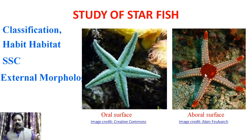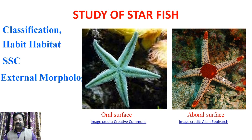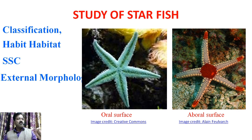First of all, anus. The anus is present at the center of the central disc on the aboral surface. Then it consists of the madreporite. It is a porous, button-shaped structure present at the inter-radius of the central disc on the aboral surface. The two arms between which the madreporite is situated are called a bivium and the remaining three arms are called a trivium. The madreporite is a sieve-like porous structure that opens into the stone canal of the water vascular system.